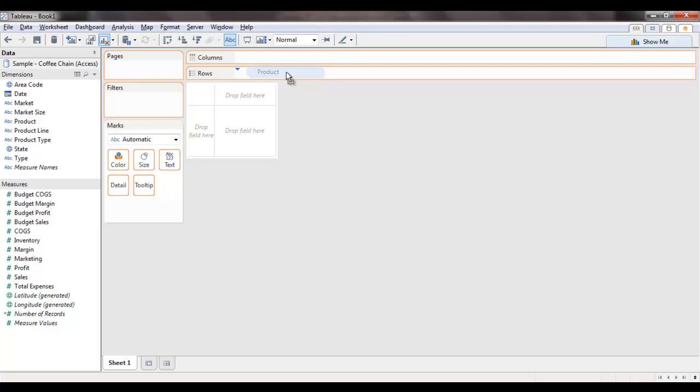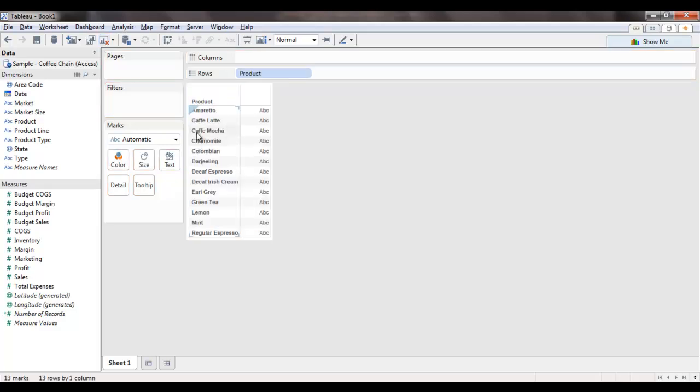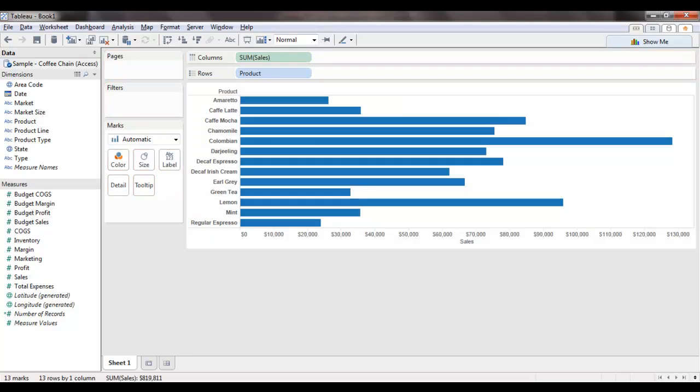Optionally, I can also drop it to the area that says drop fields here. Let us now drag and drop the sales measure to the columns. As you can see, Tableau has quickly created a horizontal bar view for us.